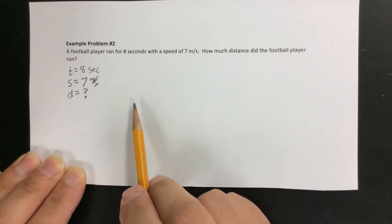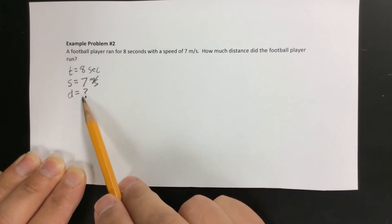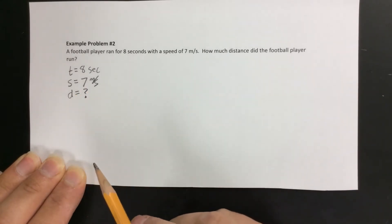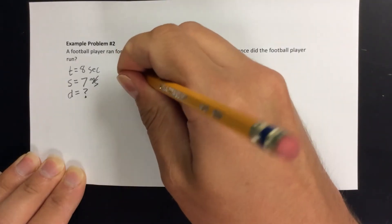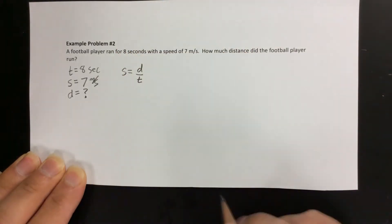Our next step is to write the original formula. We need a formula that has distance in it with everything else we need to know. That's the only formula we've learned so far: speed equals distance divided by time.